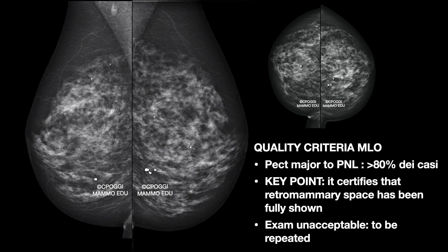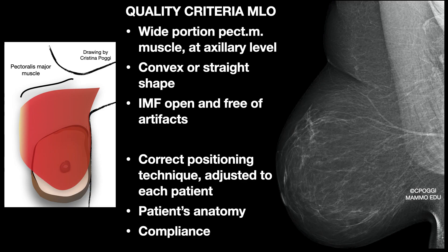In this example, there is not enough muscle in length, and so no retro-mammary space — even in CCs — and it is unacceptable. This is the muscle shape to have in every MLO projection. The shape is convex and very wide at axillary level, with the latissimus dorsi behind, showing a triangle more radio-opaque than the pectoralis. Wide and well-stretched in the central part and in the inferior part too, which presents itself with a rounded tail. This is the anatomical correspondence in the drawing.